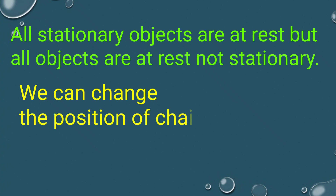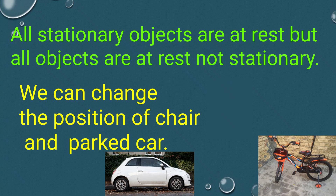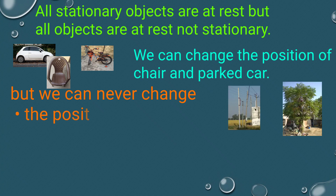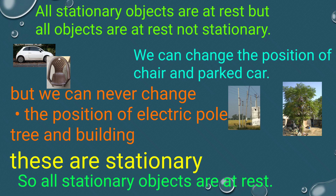We can change the position of a chair, a parked car, or a bicycle. But we can never change the position of electric poles, trees, and buildings, because these objects are stationary — they can never change their position. So all stationary objects are at rest.